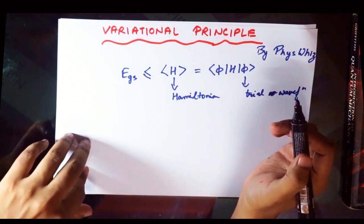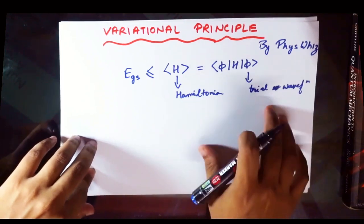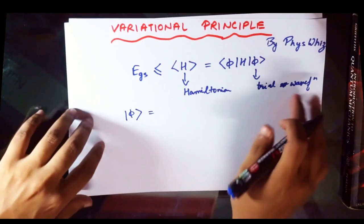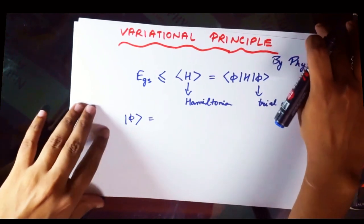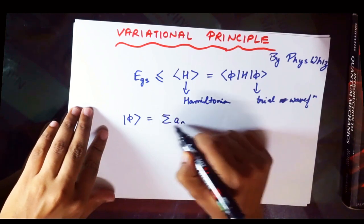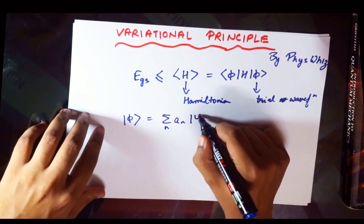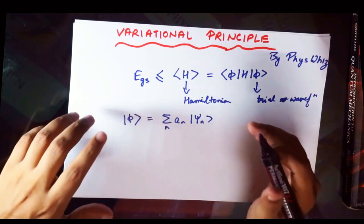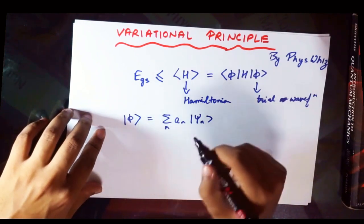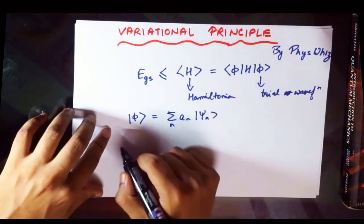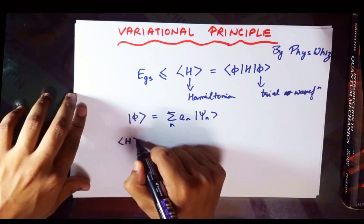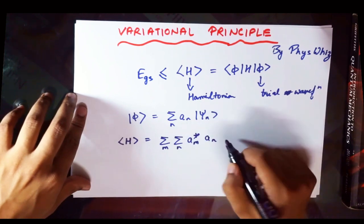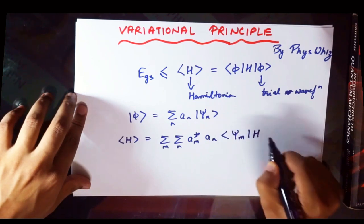Now we'll go through a quick proof of the variational principle. Since the trial wave function phi should be similar to the actual wave function, we can write it as a linear combination of the actual eigenfunctions psi_n of the Hamiltonian. Since the psi_n form an orthonormal and complete set, phi can be written as a linear combination of them. We then take the expectation value of H, which gives us terms involving psi_m, H, and psi_n.